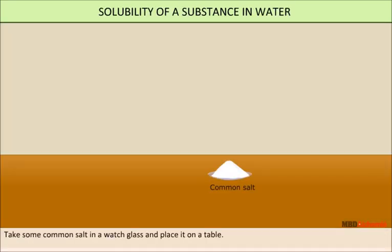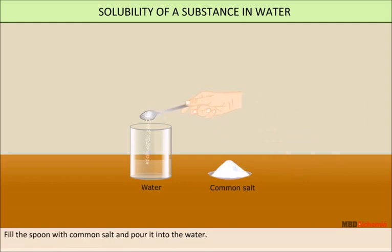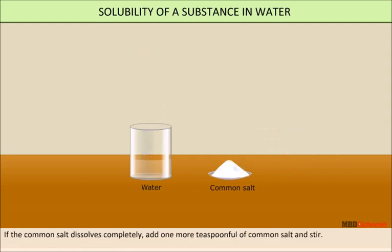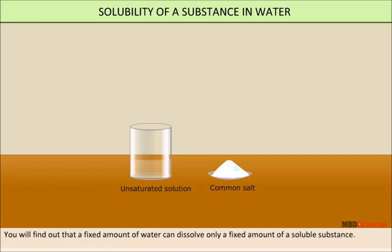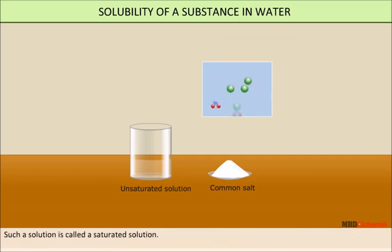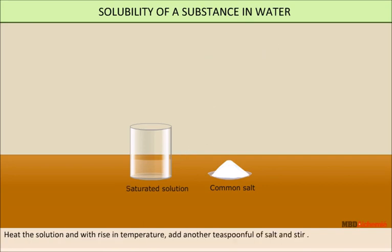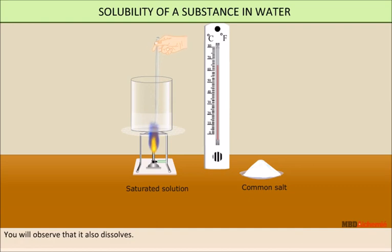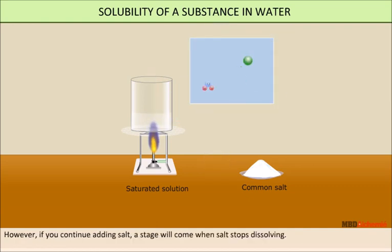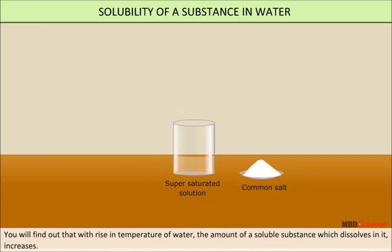Take some common salt in a glass watch and place it on the table. Place a beaker half filled with water on the table. Fill a spoon with common salt, pour it into the water, and stir. Continue doing so until the salt stops dissolving. A fixed amount of water can dissolve only a fixed amount of soluble substance — such a solution is called a saturated solution. Now heat the solution and with the rise in temperature, add another spoonful of common salt and stir. It will dissolve. You will find that with the rise in temperature of water, the amount of soluble substance that can dissolve in it increases.